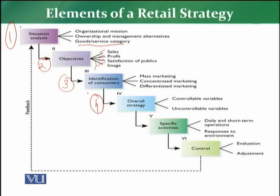The fourth element is the overall strategy. The retailer moves to the overall strategy and has to spell out all controllable variables and all uncontrollable variables — what are the things the retailer can control, and what are the activities or variables which the retailer will not be able to control.